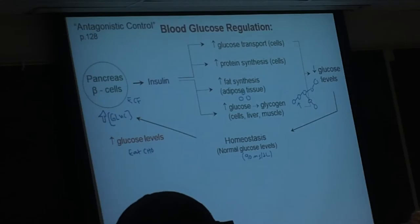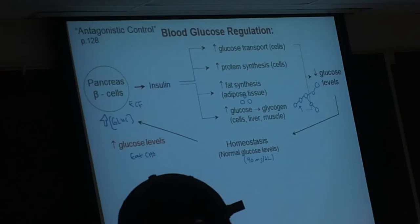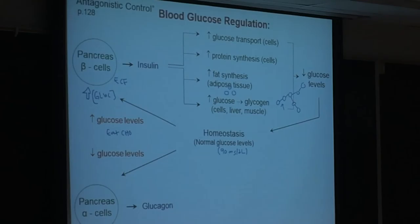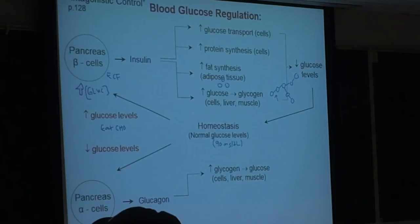For the alpha cells and glucagon, pretty much everything is just the reverse of what we see for insulin. The only thing that I didn't include in target cells or in target effects would be protein synthesis. So it doesn't appear that glucagon plays any role in modifying protein synthesis activity of cells. That one seems to be primarily just associated with insulin hormone.